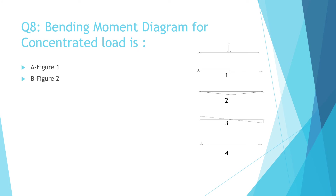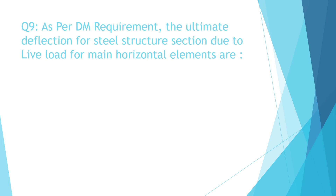Question 8: Bending moment diagram is: a) Figure 1, b) Figure 2, c) Figure 3, d) Figure 4. The correct answer is b) Figure 2.